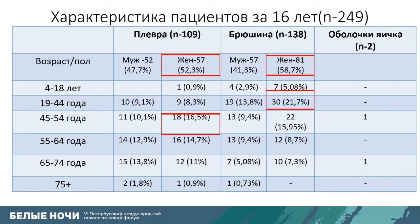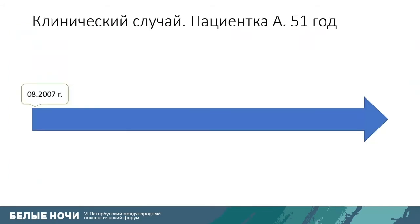The abdominal group was younger — from 19 to 44 years — while the pleural group was older. Let me provide you with some cases.